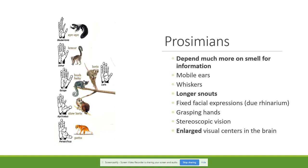When you look at some prosimians, they may look like a squirrel or another small mammal, and you can see that they share many characteristics with other mammals. However, they also have the important primate characteristics of grasping hands, stereoscopic vision, and a large visual center in the brain.